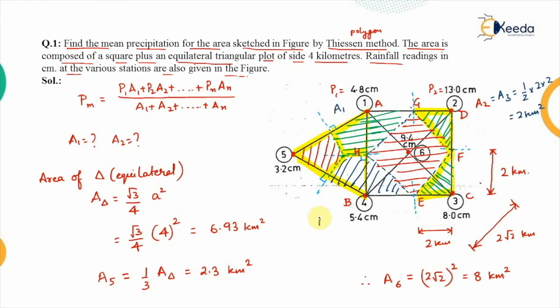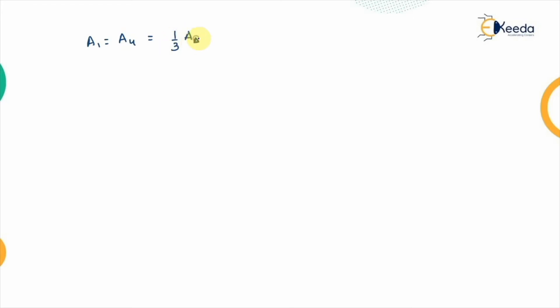The remaining areas A1 and A4 are also equal to each other. Each comprises a portion of the triangle and a portion of the square. The triangular portion of A1 is also ½ × 2 × 2 = 2 square kilometers. Therefore A1 = A4 = one-third of the triangle area (2.3) plus the square portion (2) = 4.3 square kilometers.